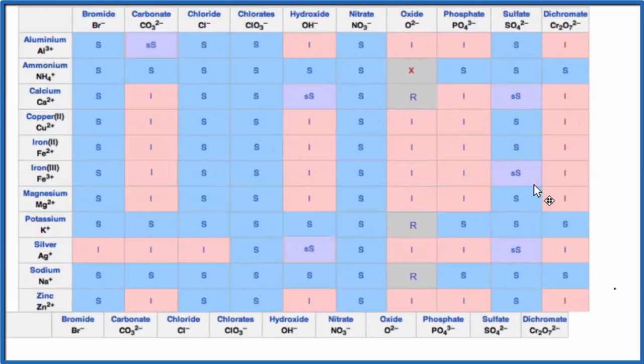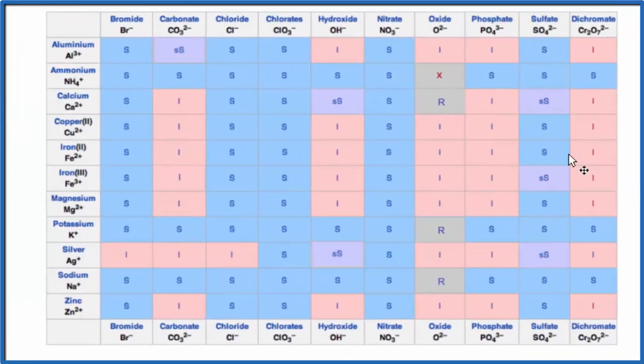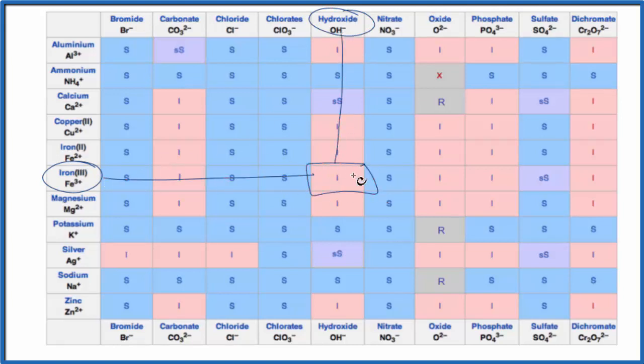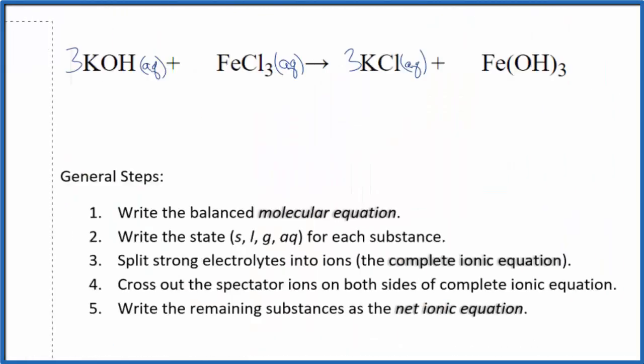Let's look this up on a solubility table. So we're going to find iron three. These are the positive ions. And right here, iron three. And then on the top, here's the negative ions, the anions hydroxide. So we go down and we go over, and that I there means it's insoluble. So iron three hydroxide will be insoluble when it's in water, and that means that it's going to be a solid because it didn't dissolve. So we're going to put an S after here.